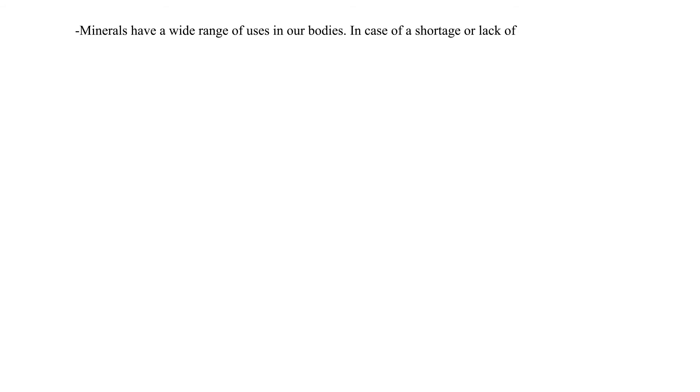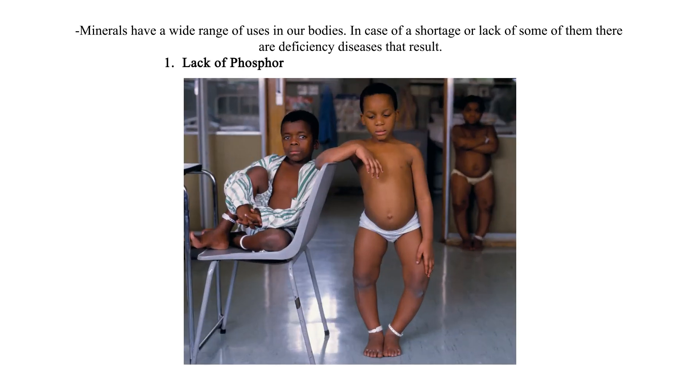Minerals have a wide range of uses in our bodies. In case of a shortage or lack of some of them, there are deficiency diseases that result. 1. Lack of phosphorus causes rickets — poorly developed bones.